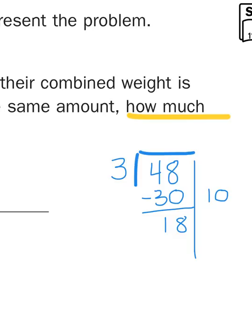I know that 6 times 3 equals 18, so that means I can divide 18 into 3 groups and get 6 in each group. I'm going to take 18, which is the product of 6 times 3, and subtract it from the 18 I got before, which is going to leave me with no remainder. So now I have two partial quotients, 10 and 6, which added together is going to give me a total quotient of 16.